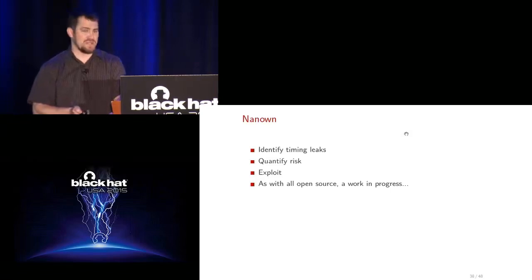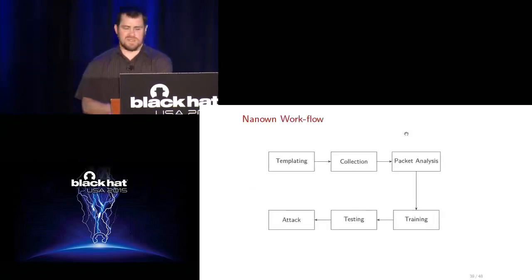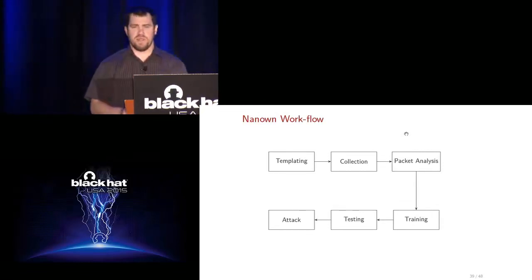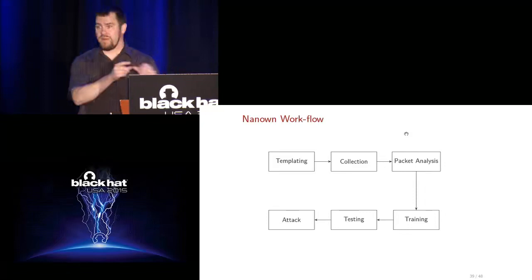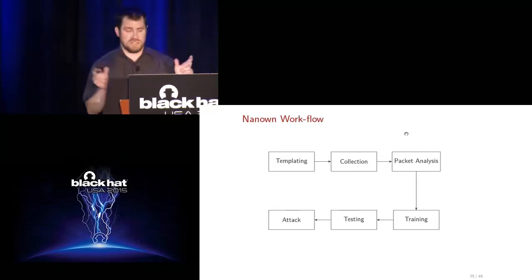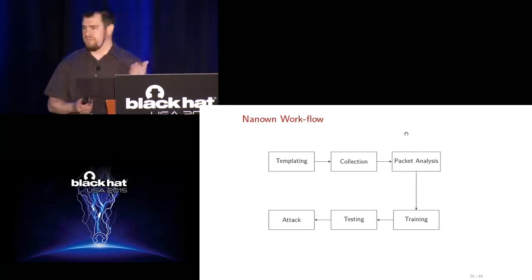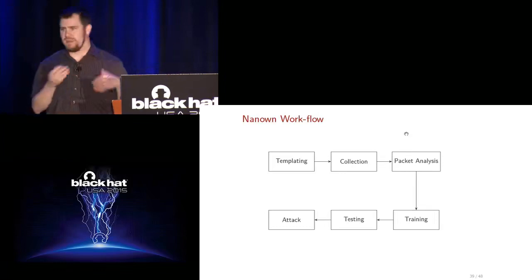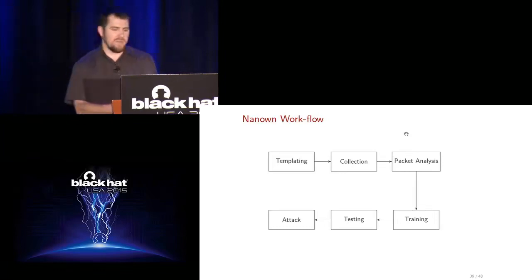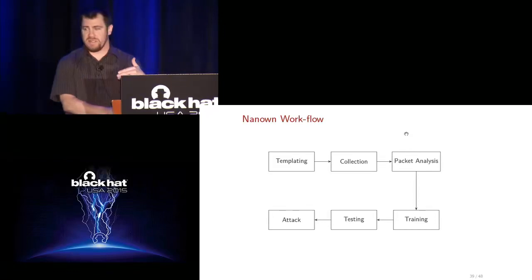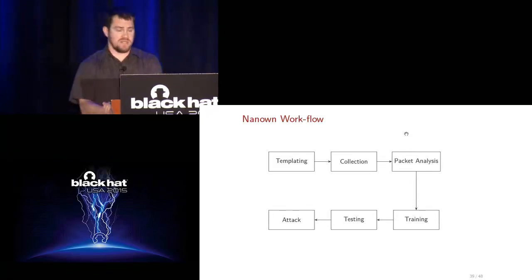It's definitely a work in progress and not very user-friendly yet. The workflow for nanone: at the beginning you go through a templating stage where you instruct the tool on your test cases — a valid SSN and an invalid one, or more than two test cases — and instruct it on what the HTTP requests look like, where data gets embedded in the request. From that point, the next four stages are pretty much automated: you run the collection scripts, which grab a whole bunch of samples as a baseline to learn about timing differences.